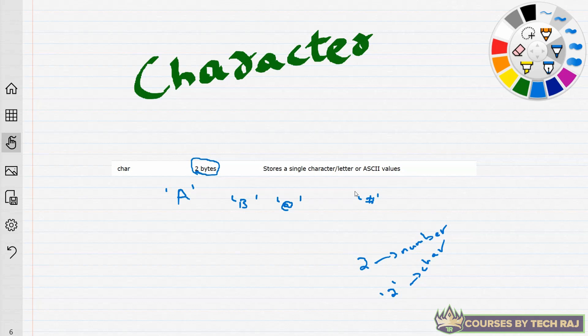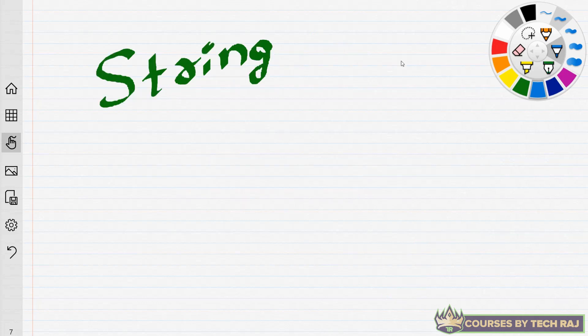Anything enclosed within single quotes is interpreted as a character by the compiler. Also, a character doesn't only mean English alphabets — you can represent any ASCII value or letter. If you don't know what an ASCII value is, I'd suggest you Google 'ASCII table' — it's a really simple concept. That's all about the character data type.